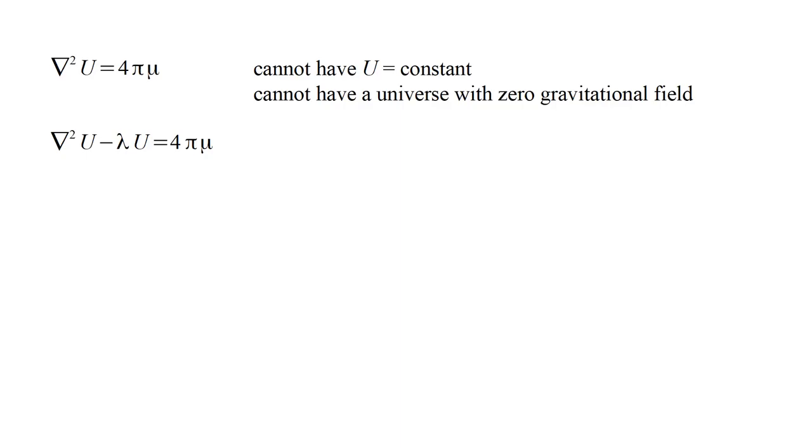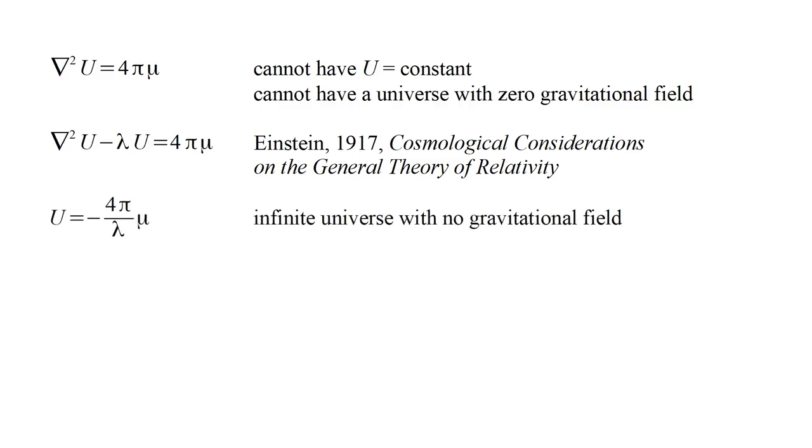Before Hubble's discovery of the expanding universe, it was commonly assumed that the universe is static on large scales. To account for this, modifications of Poisson's equation were proposed. For example, as shown here, an additional term minus lambda u can be added to the left side. In fact, Einstein discussed this modification in his 1917 paper, Cosmological Considerations on the General Theory of Relativity, as a way to motivate a similar modification he made to the relativistic version. We'll consider that later. The important point is that this modified equation has a constant potential solution, u equals minus four pi over lambda mu. This describes a universe with no gravitational field.